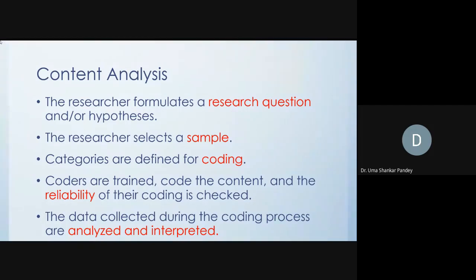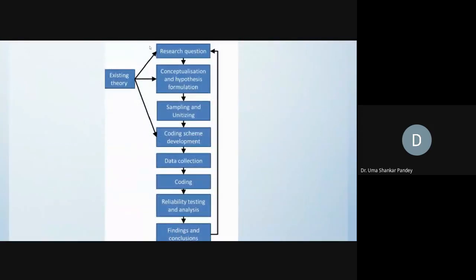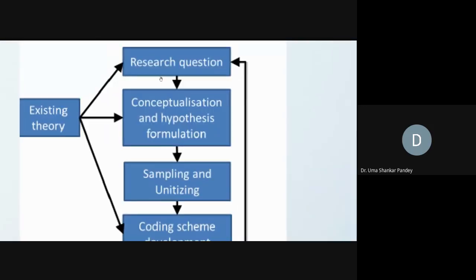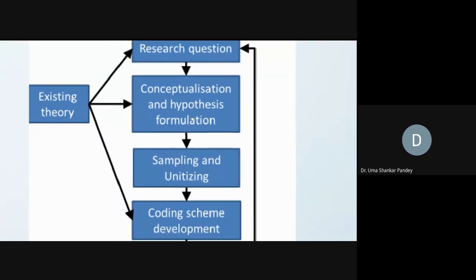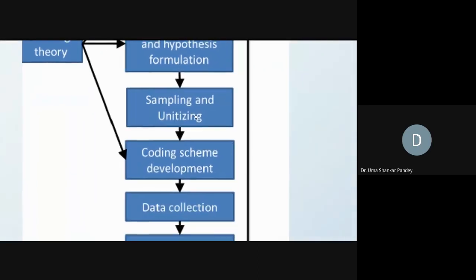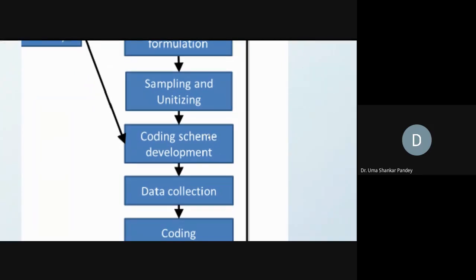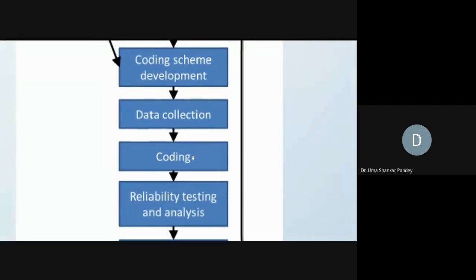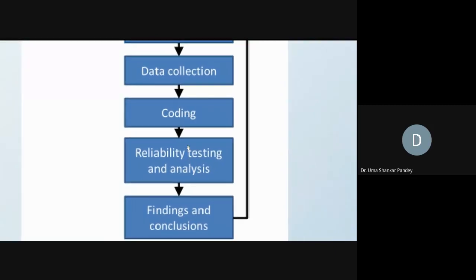Qualitative content analysis is basically about social research, while quantitative is generally media research. We have research questions, possibly based on existing theories. We'll talk about deductive and inductive approaches. Then we go for hypothesis formulation, sampling and unitizing — deciding what units we are going to study — develop a coding scheme, collect the data, do the coding, and finally perform the reliability test and draw findings and conclusions.